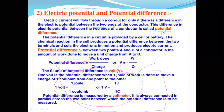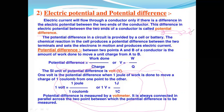For example, if one transformer has 100 volts and another has only 50 volts, current flows from the higher-voltage transformer to the lower-voltage one. This is the potential difference. If both transformers have the same voltage, there is no potential difference and charged particles do not flow between them.